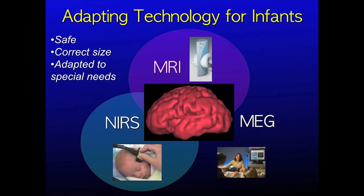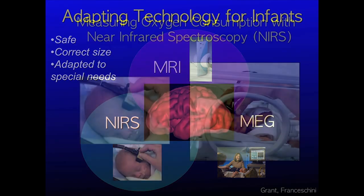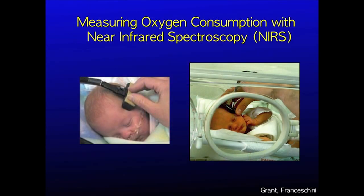The other two modalities we are developing are near infrared spectroscopy and magnetoencephalography. Near infrared spectroscopy is totally safe like ultrasound and can be performed right at the bedside. It provides us with information about cerebral oxygen consumption. Since oxygen is a primary fuel for neurons, this gives us information on regional brain neural activity and neural health.